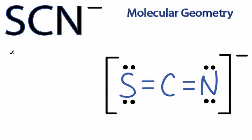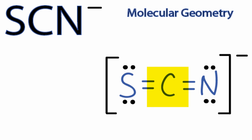To determine the molecular geometry for SCN minus, we'll start by looking at the Lewis structure. We can see that the central carbon has a sulfur on one side and a nitrogen on the other. There are no lone pair or unbonded pairs of electrons on the carbon.